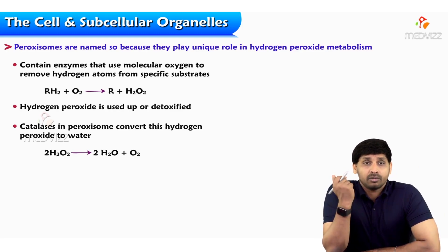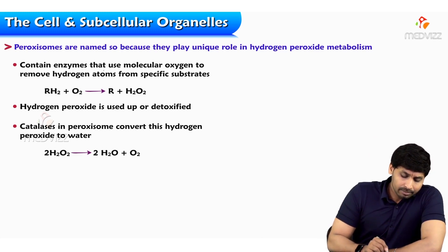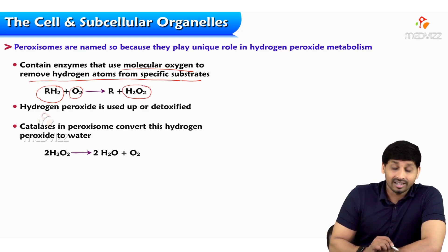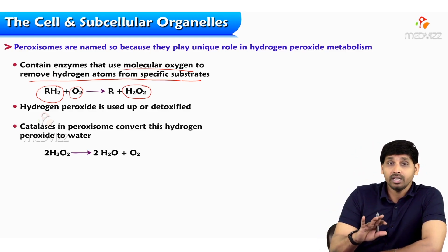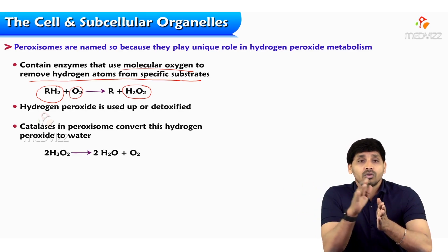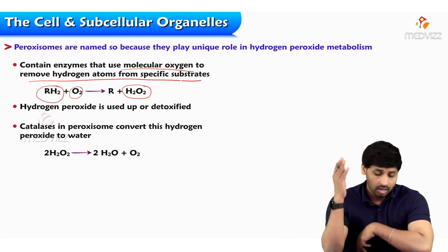Peroxisomes are named so because they play a unique role in hydrogen peroxide metabolism. They contain enzymes that use molecular oxygen to remove hydrogen atoms from specific substrates, converting them to hydrogen peroxide. This hydrogen peroxide must then be detoxified, because if left unchecked it would keep producing oxidants inside the cell, which causes a burden and leads to premature death of the cell.